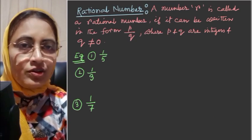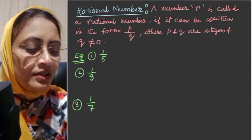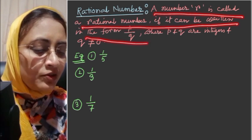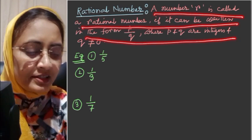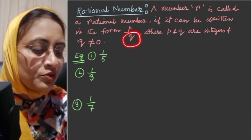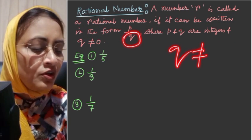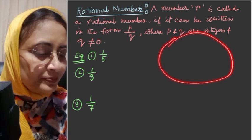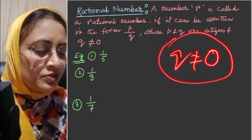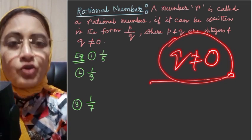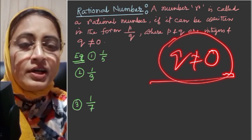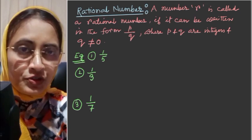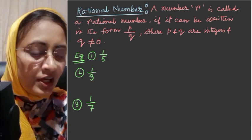Let's recall the definition of a rational number. A number r is called a rational number if it can be expressed in the form p by q, where p and q are integers and q must not be equal to 0. If the denominator is 0, it is not defined — that's why we write q not equal to 0 in the definition.